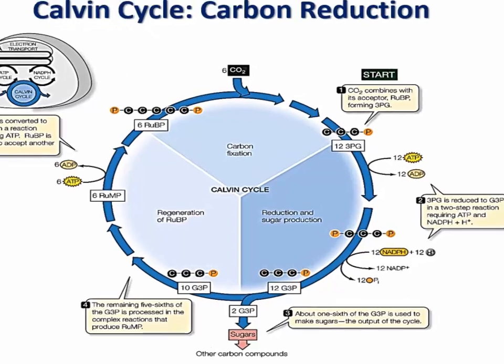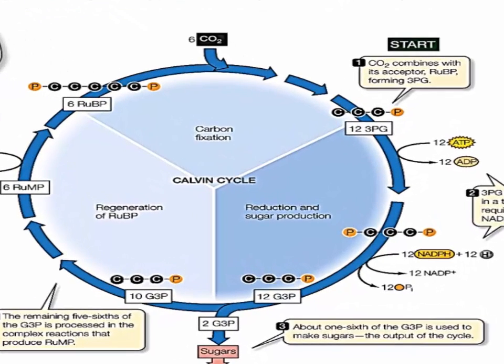The overall reaction of carbon fixation is therefore: ribulose bisphosphate plus carbon dioxide gives two molecules of 3PG. In the second process of the Calvin cycle, 3PG is reduced and the atoms rearranged to give glyceraldehyde 3-phosphate, or G3P.